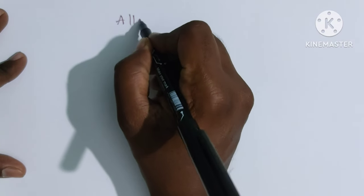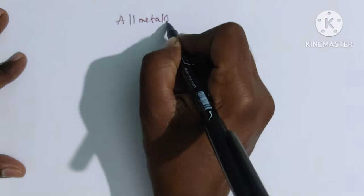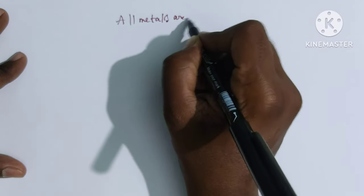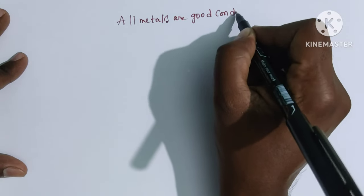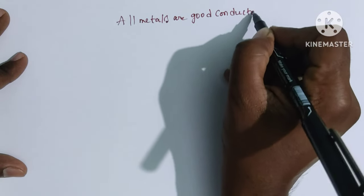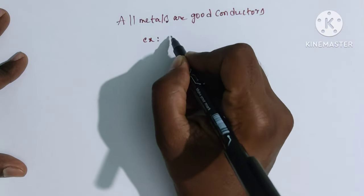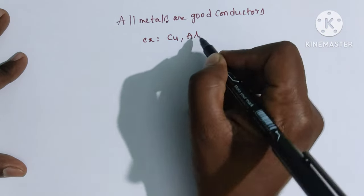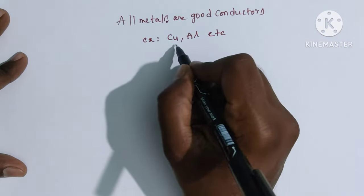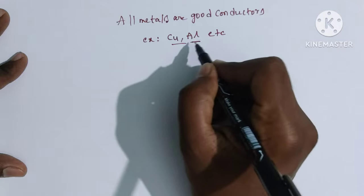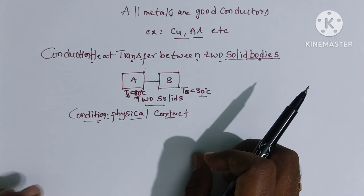All metals are good conductors. Examples include copper, aluminum, etc. In those metals, heat is conducted at a very fast rate.